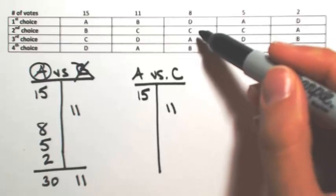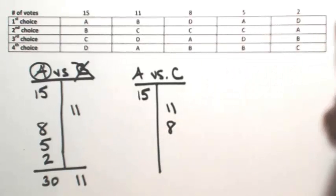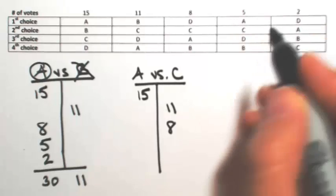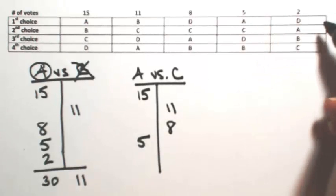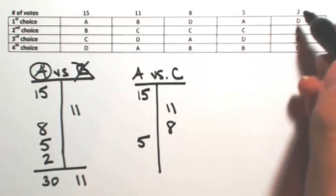In the third one, C is over A, so C gets 8. A is over C, so A gets 5. And A is over C, so A gets 2.